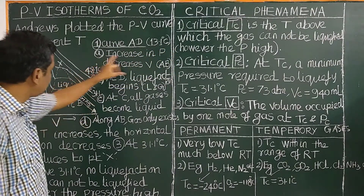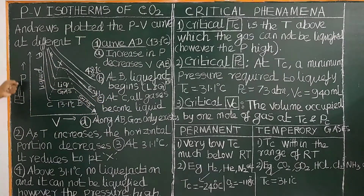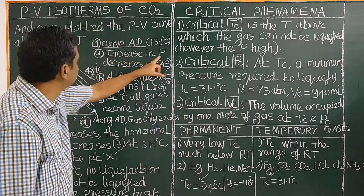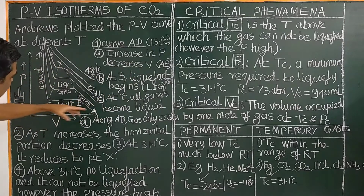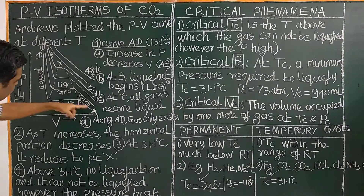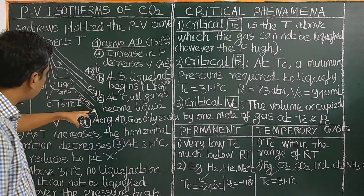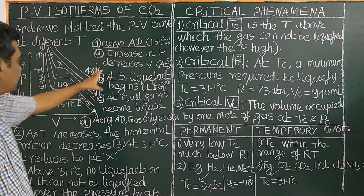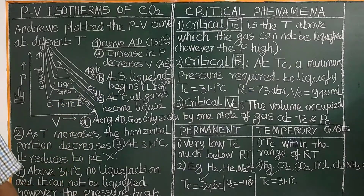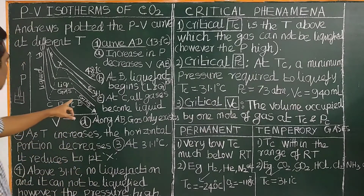When you increase pressure, volume will decrease along curve A to B. At point B, liquefaction starts — the carbon dioxide gas begins to liquefy.